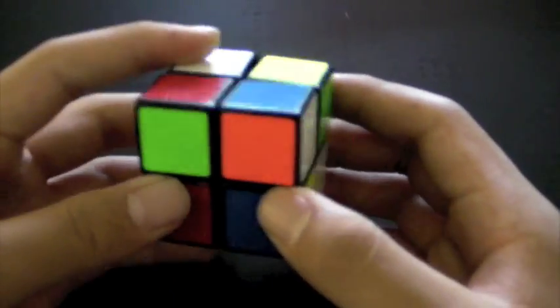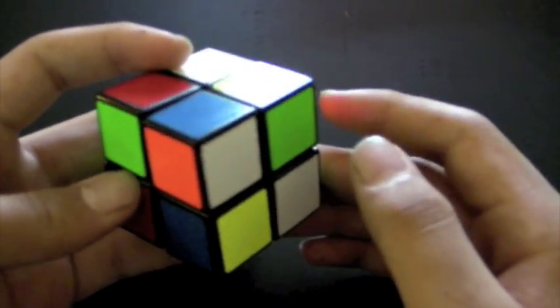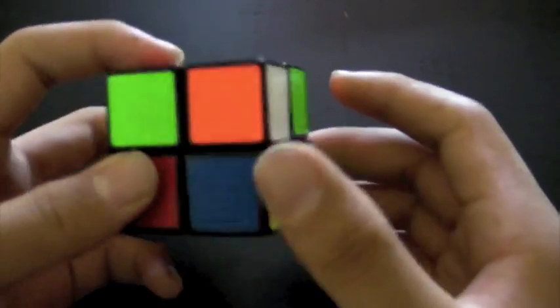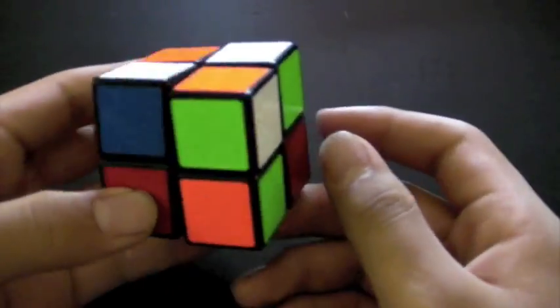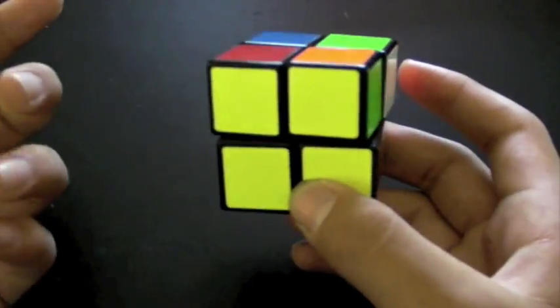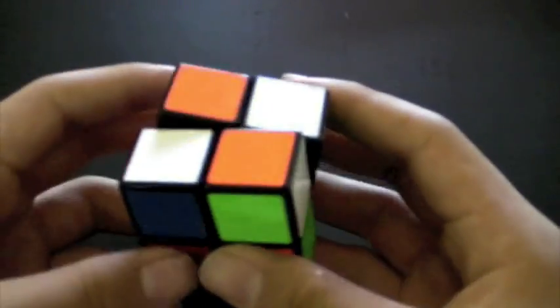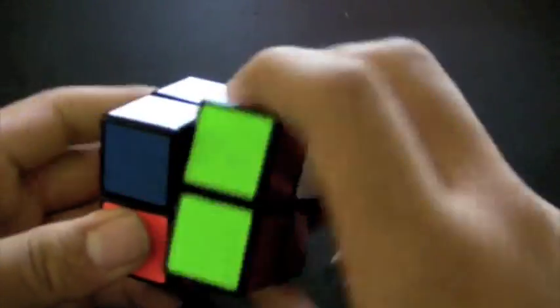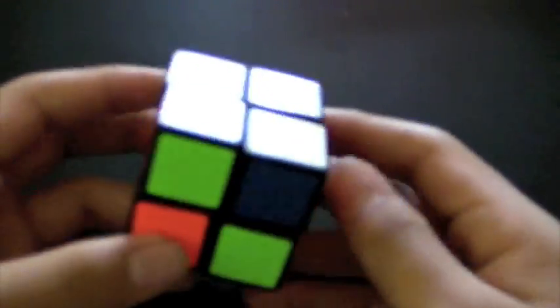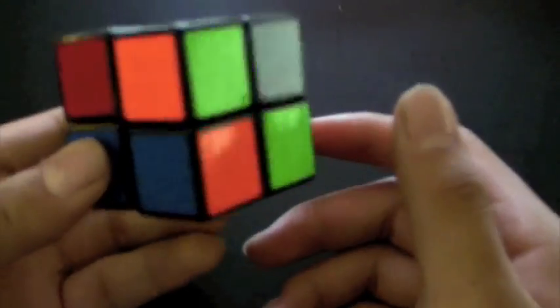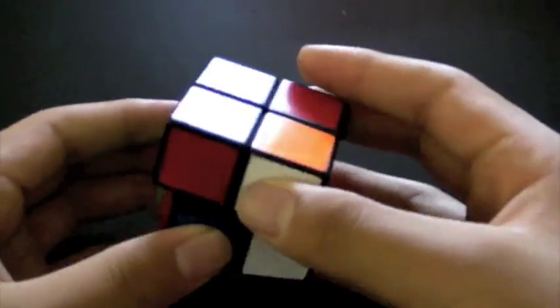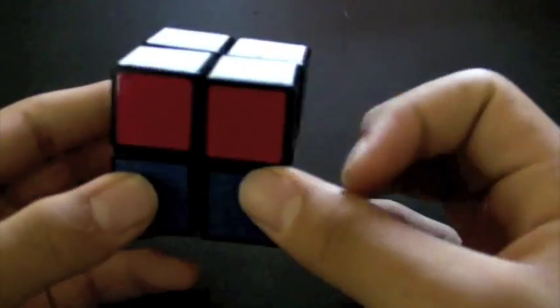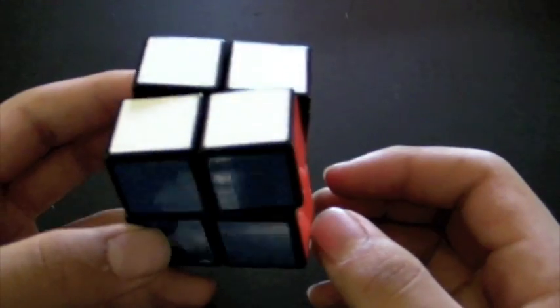The next method is the Ortega method. I already made a video on this, so I won't really explain this too much. But basically, first you make a face of one color instead of a layer. Then you do one of the 7 orientation algs. And then you just permute both layers, which is PBL. And there are 5 PBL algorithms.